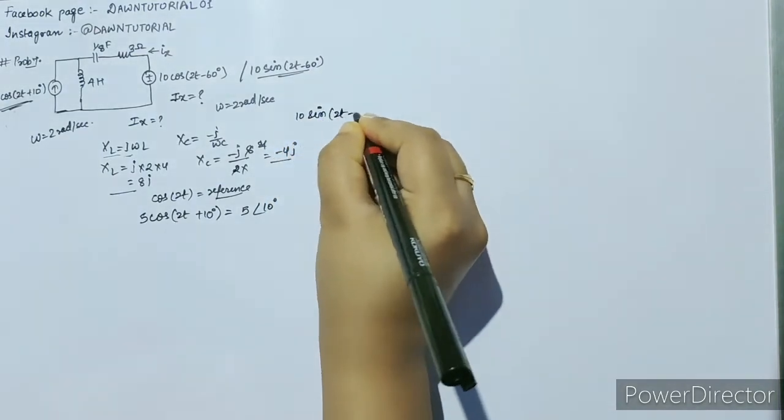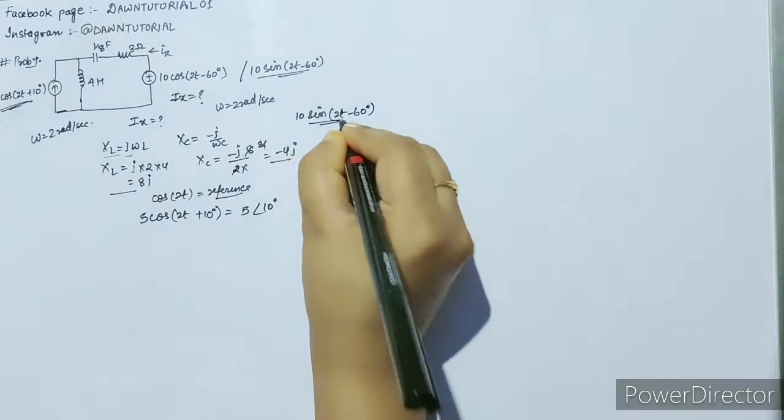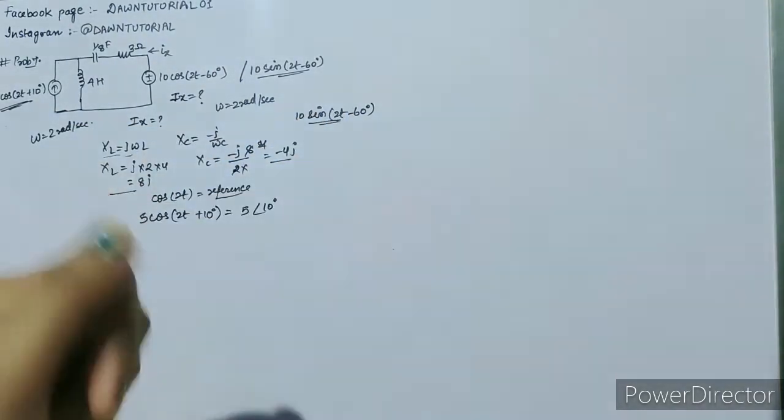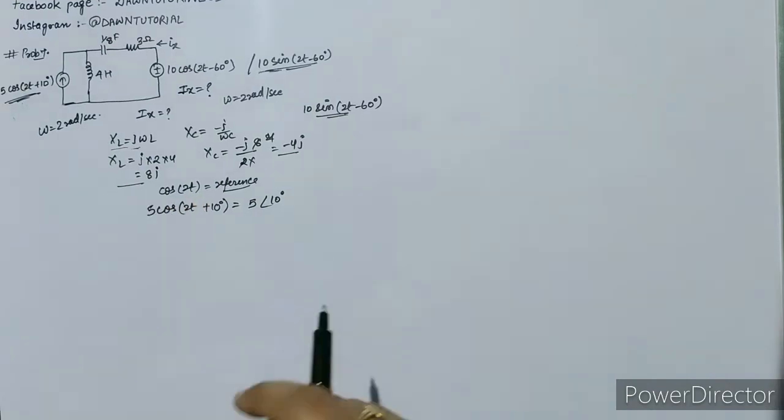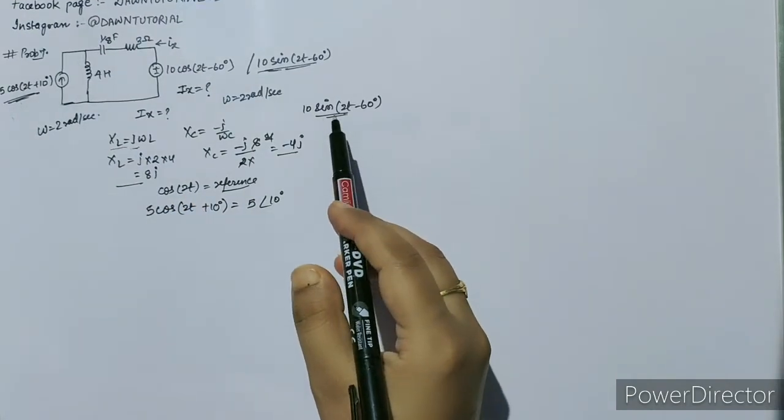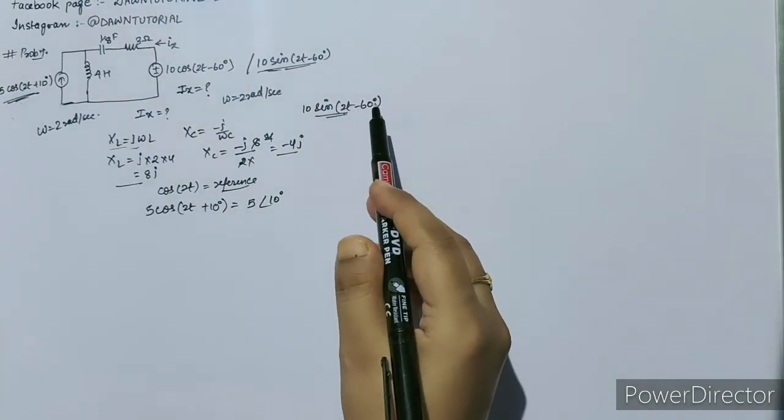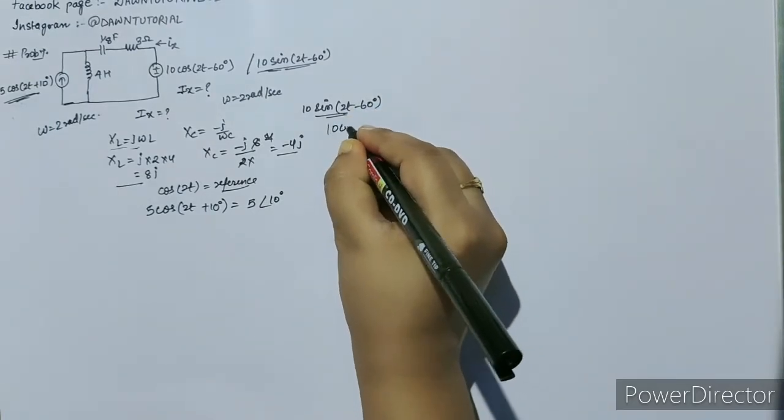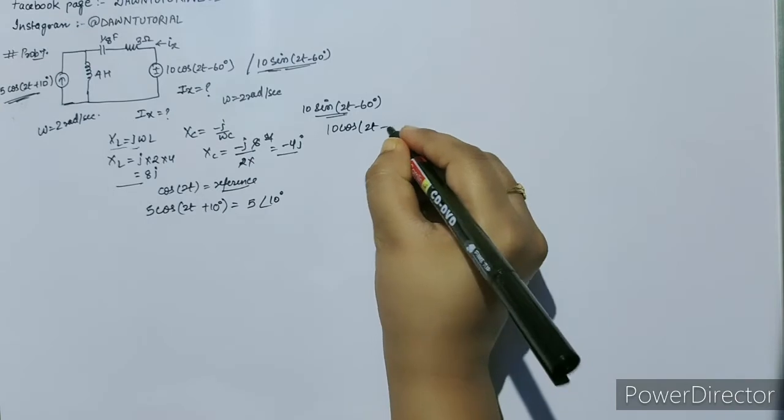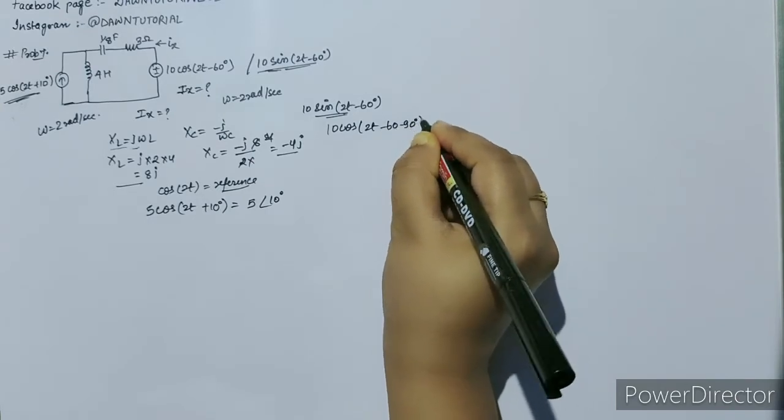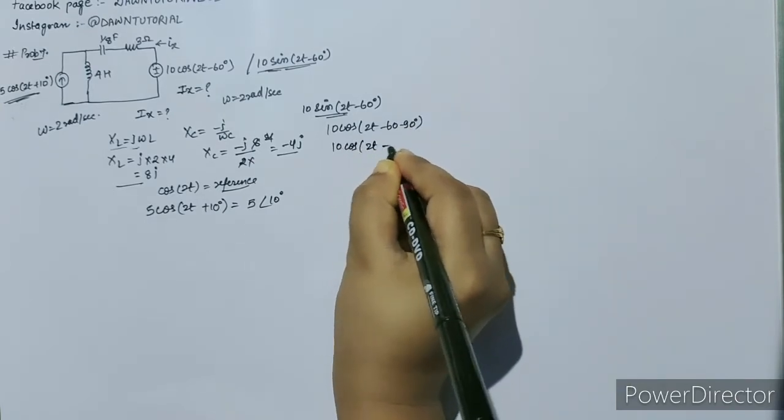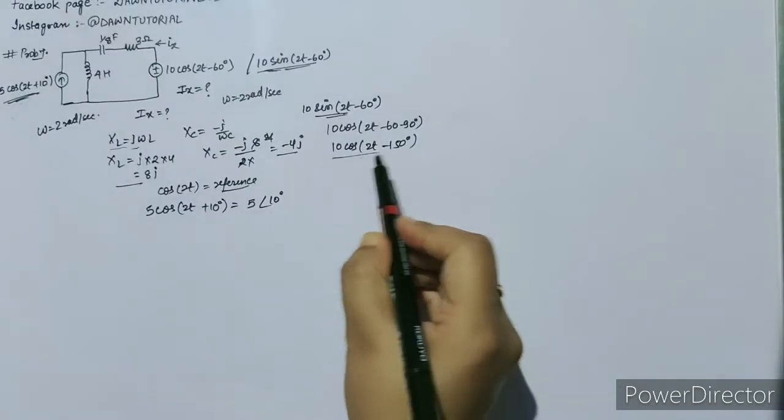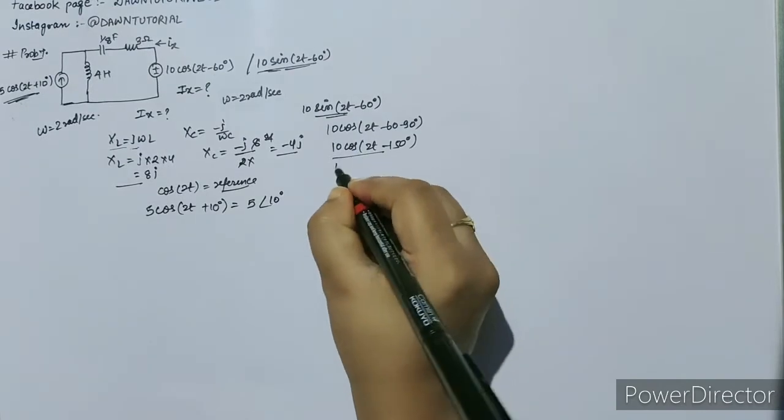Simply add -90° to change it to cos term: 10 cos(2t-60°-90°), so this will be 10 cos(2t-150°). Now change this source to phasor domain, so you will write as 10∠-150°.